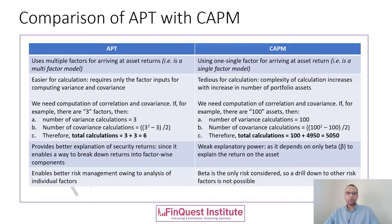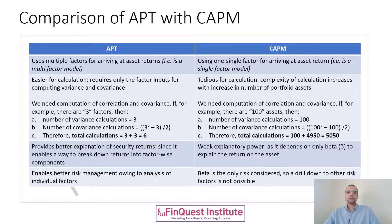That's actually one of the strengths of the APT. In CAPM, we have a single factor model — we are using one single risk factor, which we call the market risk factor, and that is the only thing used in our analysis. The idea is we are bringing together all of the risk factors into one single risk factor, which we call market risk, and that is what we use in CAPM.